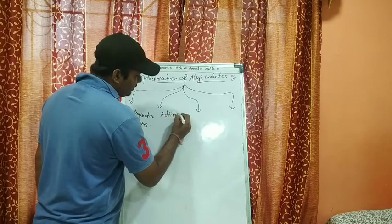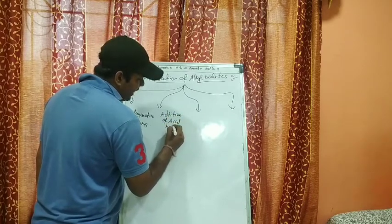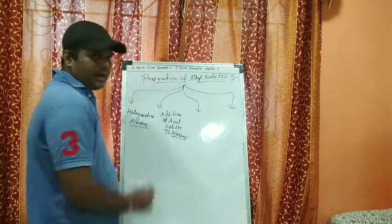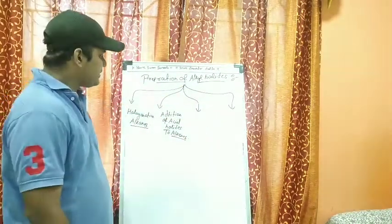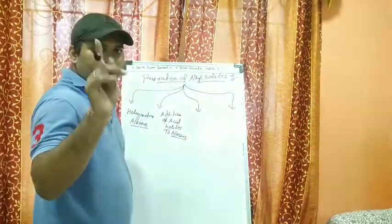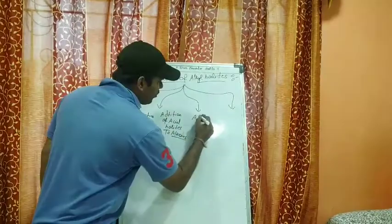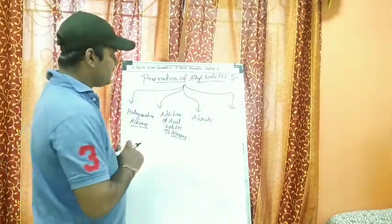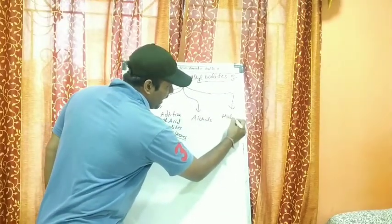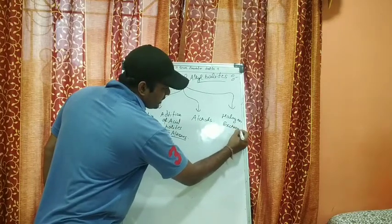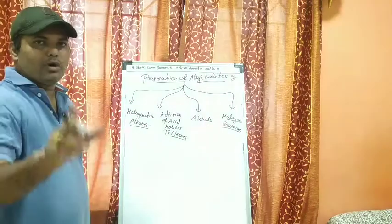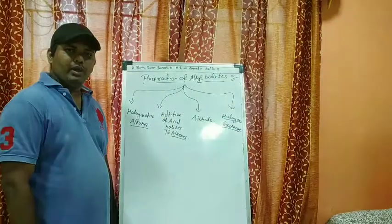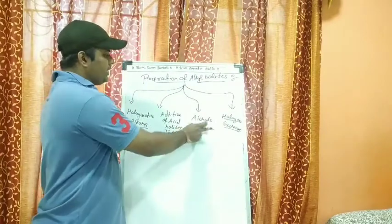The first method is from alkanes, the second from alkenes. The third method — which is the best and most frequently asked in the exam — is preparation from alcohols, where there are a number of reactions. The fourth method is by halogen exchange, which is also a very famous reaction. Today we are going to see all four methods.